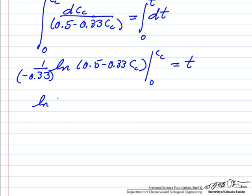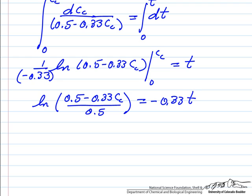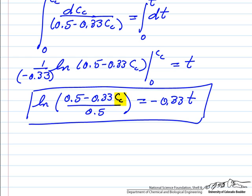We have the log of 0.5 minus 0.33 divided by 0.5 minus the concentration of C at a given time divided by 0.5 equals minus 0.33 times T. So this then we could plot to tell how the concentration of C changes with time.